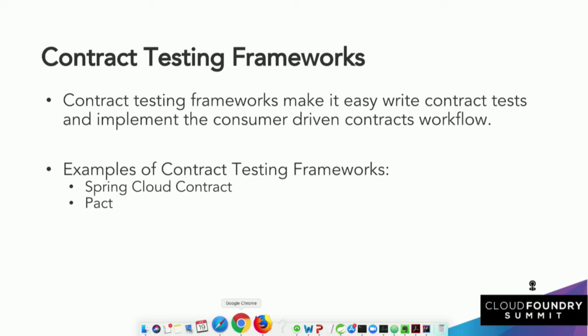The contract means that as the person providing the API, my goal is not to break my consumers, but I want them to tell me in an executable format what they need from me. If we're going to implement this pattern, we want to use a contract testing framework. In the Java world, you'll see technologies like Spring Cloud Contract — that's what we're going to demo today — and other technologies like PACT, and in other languages there are other consumer-driven contract frameworks.